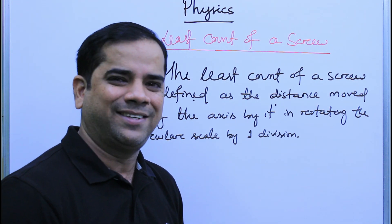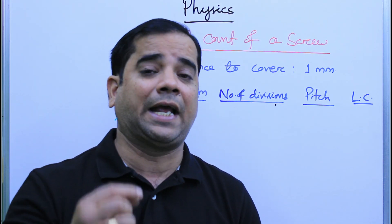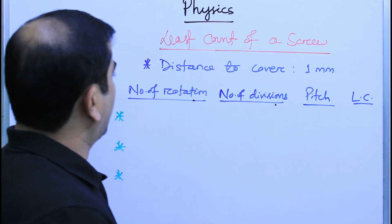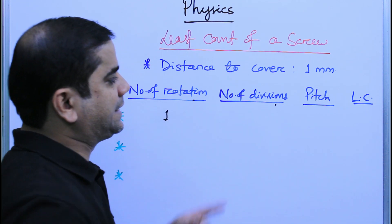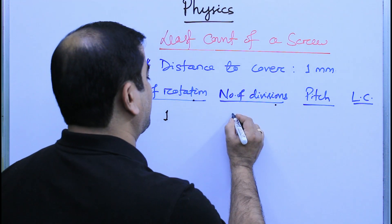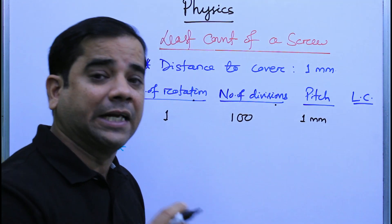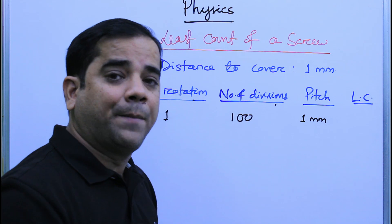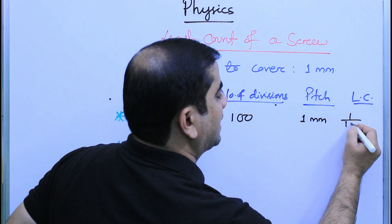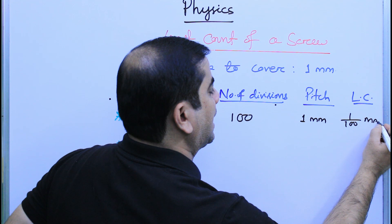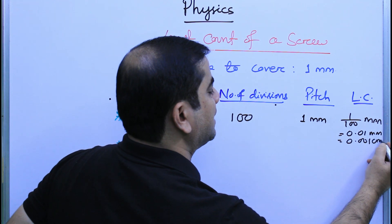Let us now discuss the least count of different types of screws where the number of divisions of the circular scale differ. If the number of rotations to cover 1 millimeter is one, and the number of divisions on the circular scale is 100, the pitch is 1 millimeter. Therefore the least count is 1 divided by 100, which is 0.01 millimeter or 0.001 centimeter.